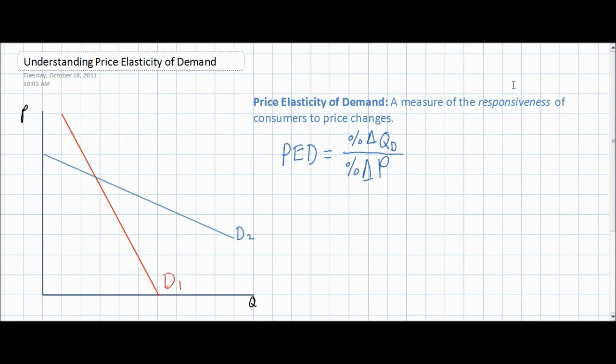At this point we'll add a couple of price and quantity combinations to our two demand curves on the graph on the left. Notice that we have two demand curves: D1, the red demand curve, represents the demand for a particular good and is steeper than D2, the demand for another good, which is generally more flat. Let's examine what happens when the price of these two goods falls from $10 to $7 and how the quantity demanded reacts depending on the slope of the two demand curves.